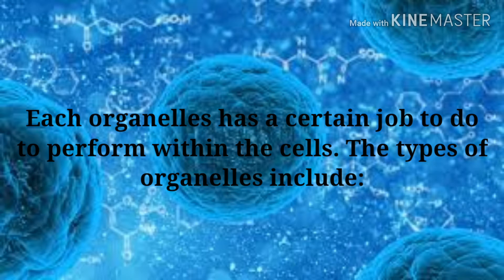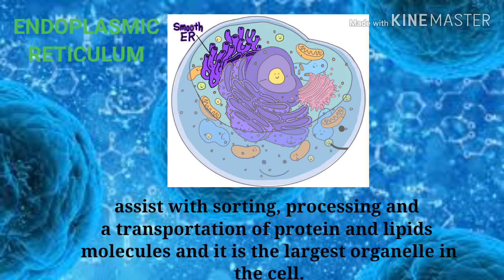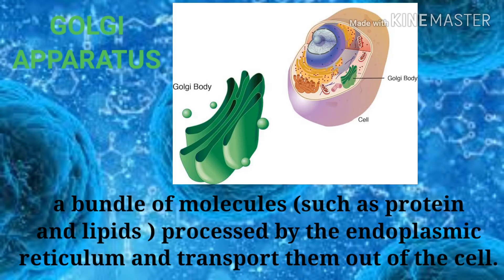Each organelle has a certain job to perform within the cell. The types of organelles include the endoplasmic reticulum, Golgi apparatus, mitochondrion, ribosome, lysosome, and peroxisome. The endoplasmic reticulum assists with sorting, processing, and transportation of protein and lipid molecules, and it is the largest organelle in the cell. The second is the Golgi apparatus, which is a bundle of molecules such as proteins and lipids processed by the endoplasmic reticulum.